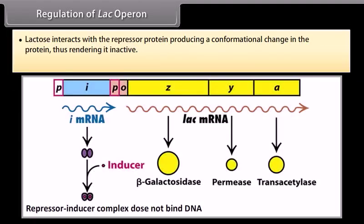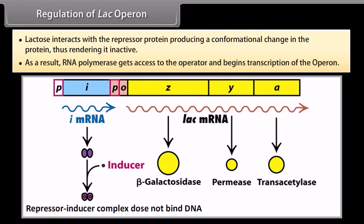When lactose is present, lactose interacts with the repressor protein producing a conformational change in the protein, thus rendering it inactive. As a result, RNA polymerase gets access to the operator and begins transcription of the operon.